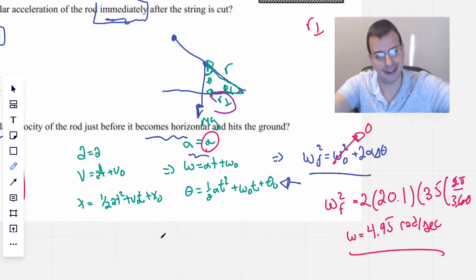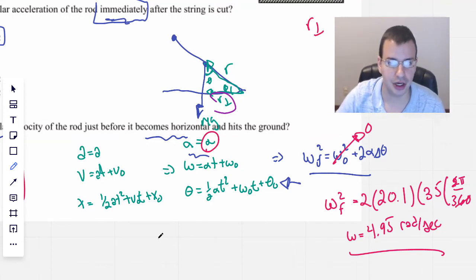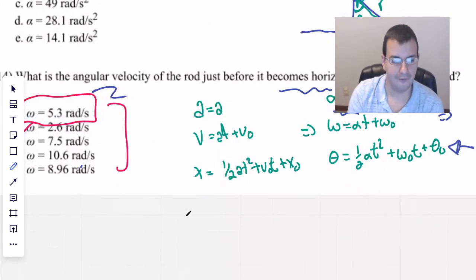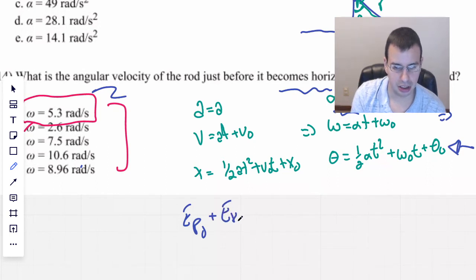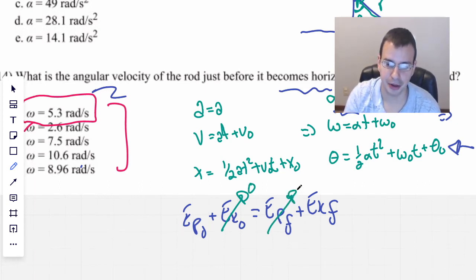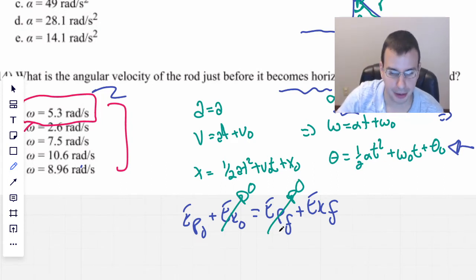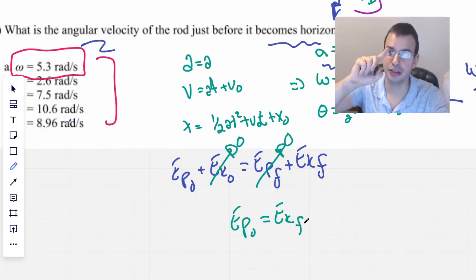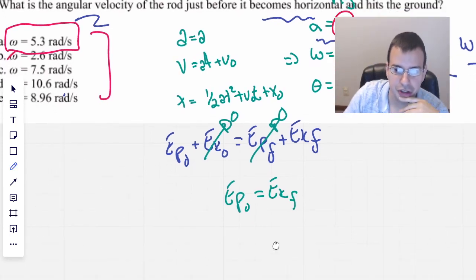Now the real question is, how do we do it the correct way? Conservation of energy. So we look at this, and we say energy potential initial plus energy kinetic initial equals energy potential final plus energy kinetic final. We're going to say that it starts off at rest, which it does, because it's tied to a rope. So that's going to be zero. And we're going to say that the energy potential is defined as zero at the bottom. So we have energy potential initial equals energy kinetic final. We're converting potential energy into kinetic.